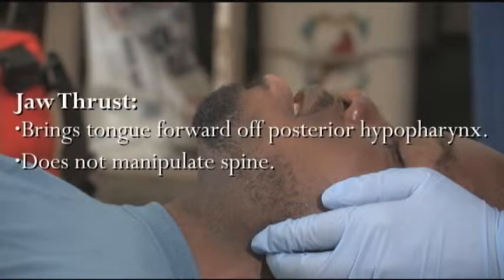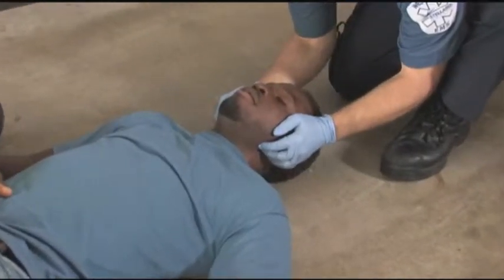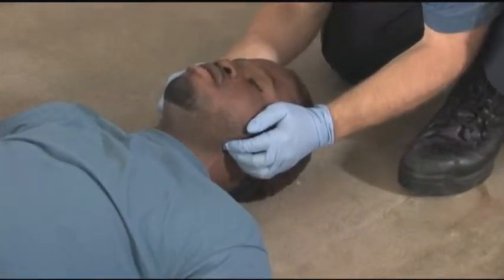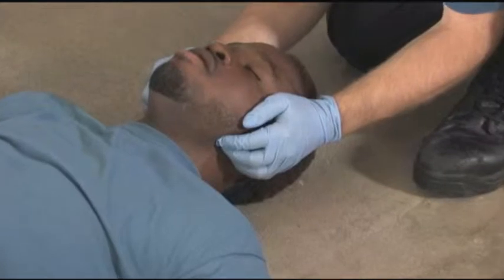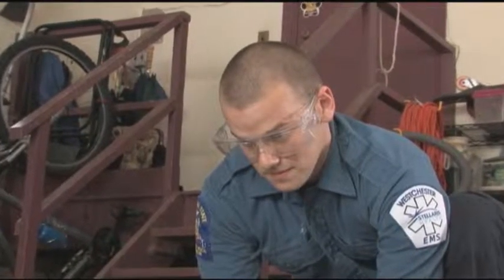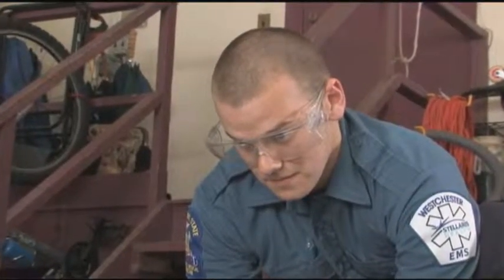This is accomplished by lifting the jaw, which brings the tongue forward off the posterior hypopharynx without manipulating the spine. This procedure can be accomplished with just your hands. However, since you will be working with the airway, you should also have gloves on those hands, plus consider using goggles and a mask to prevent being splashed or sprayed by airway or gastric secretions.